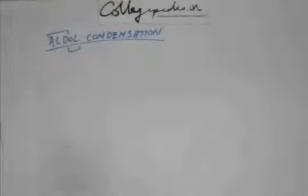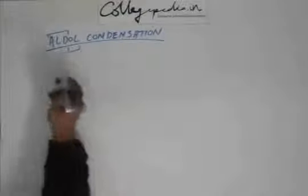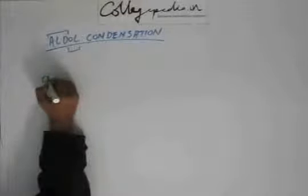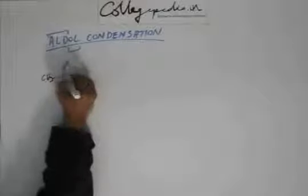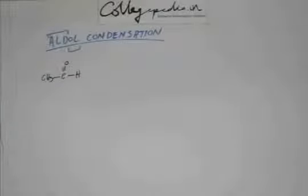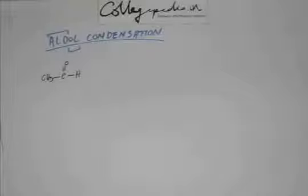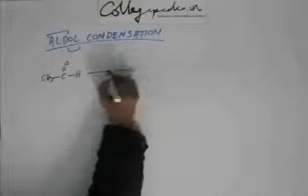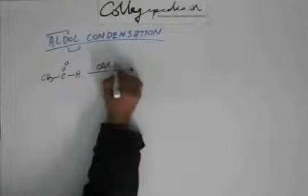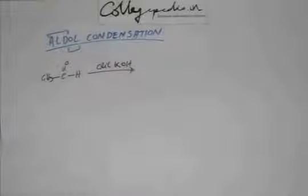Before solving problems, let's quickly get acquainted. I'm giving you some trivial problems of aldol condensation — give me the product: the condensated product and the non-condensated product, meaning just the aldol, and the alpha-beta unsaturated carbonyl compound after condensation. Suppose we have ethanal and we add dilute KOH — give me the product.